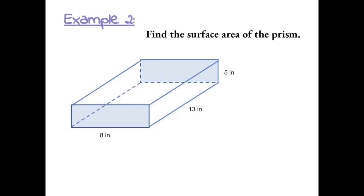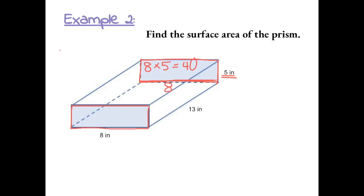Example 2: Find the surface area of the prism. We need to find the area of each part of the box. Starting with the part in the back, it has a dimension of 5, and the other side equals 8 because it's the same as that side. So the area of this is 8 times 5, which is 40. And because this is a box, the top side is also going to be 40.